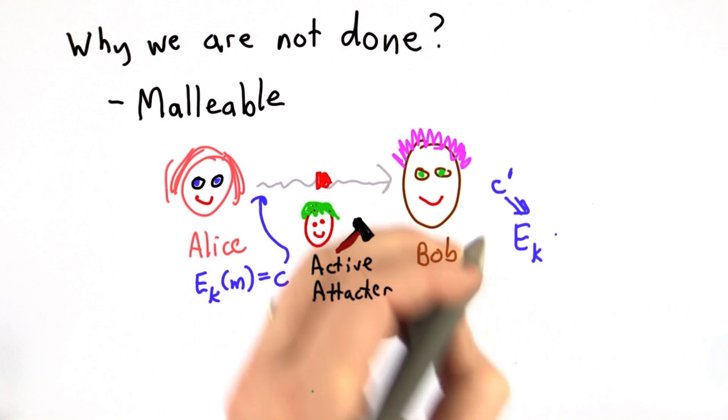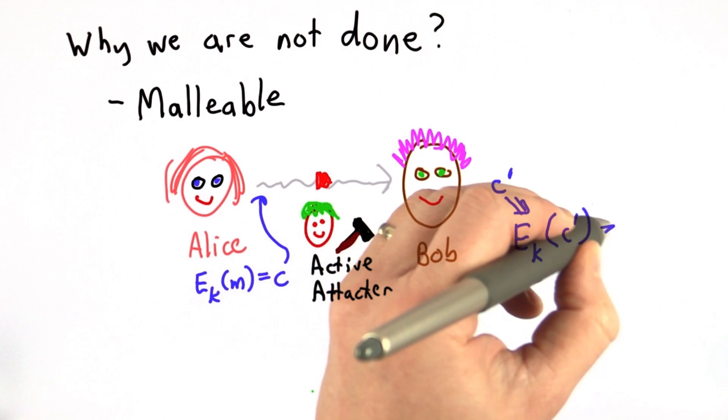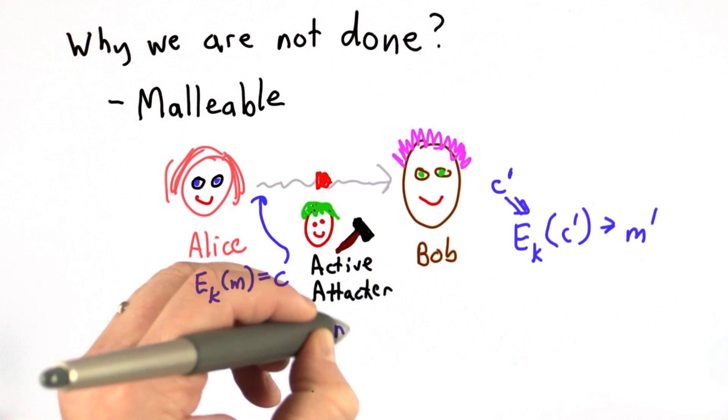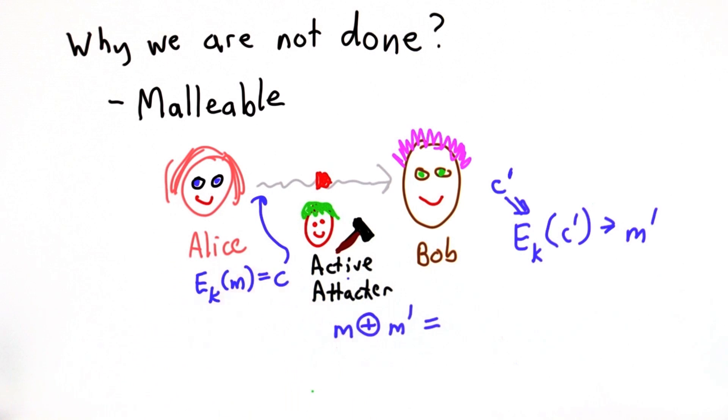The decryption of c prime would be m prime, and the attacker can actually control the difference between m and m prime, because the way the one-time pad works is just XOR, so the attacker could decide whatever difference she wants to introduce in the message. This is a dangerous property for a cipher to have.